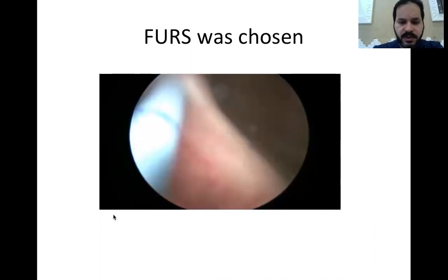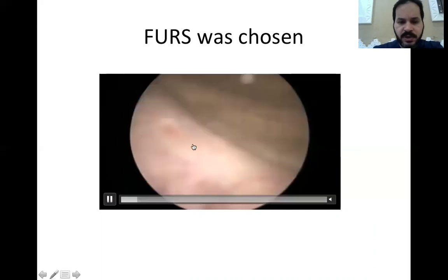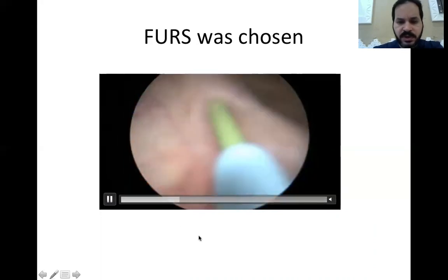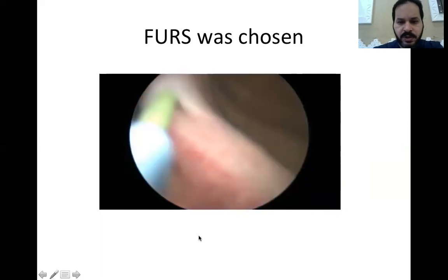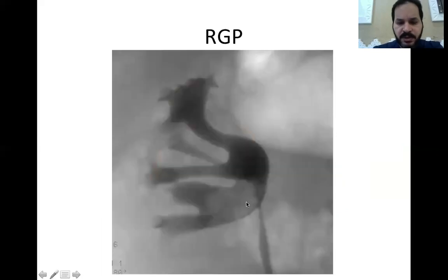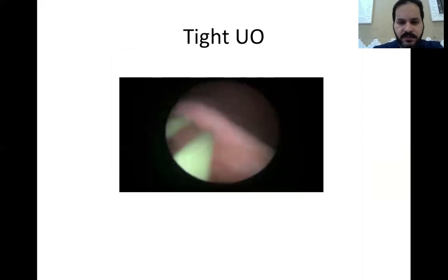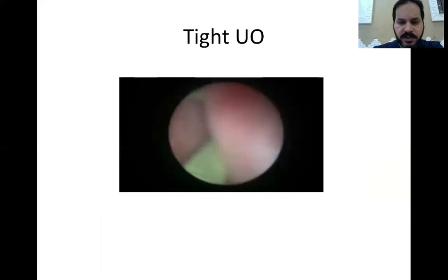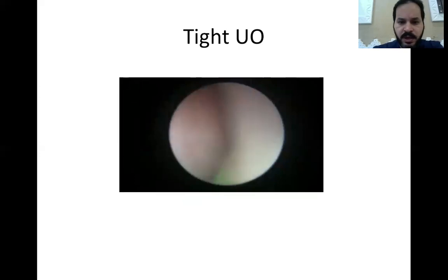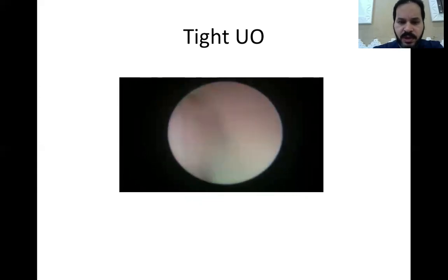We started with a cystoscopy, which showed that his ureteral curve was a little bit tight. So we proceeded with a retrograde study, which showed that the stone was situated in the lower calyx and the lower ureteral curve, causing obstruction with not much space around it. Because of the tight ureteral curve and tight lower ureter, I started with inspection and dilation of the lower ureter using a semi-rigid ureteroscope, which took only a couple of minutes and allowed us to make sure that there was nothing wrong with the lower ureter.